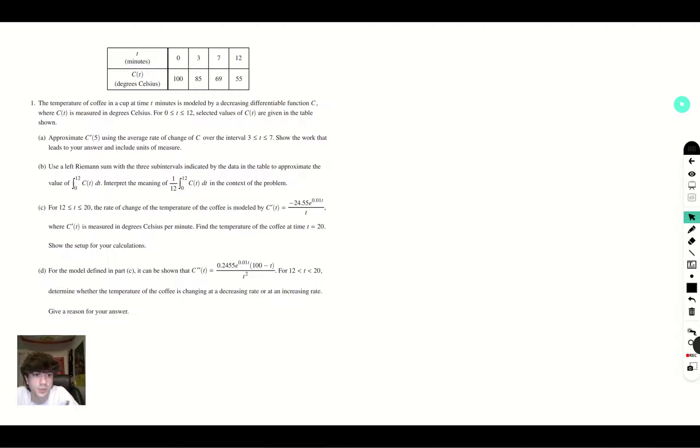Alright, so the way we're going to approximate the slope is by using this method we were taught in algebra 2, where we use the difference in the change in Y divided by the change in X. In this case, it will be C of 7 minus C of 3 over 7 minus 3.